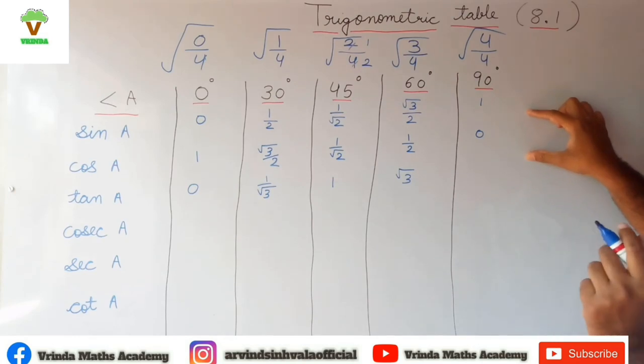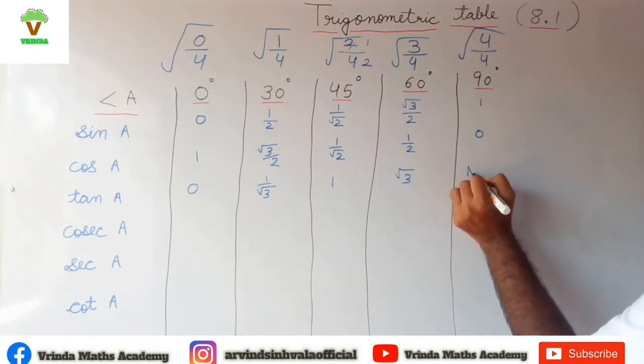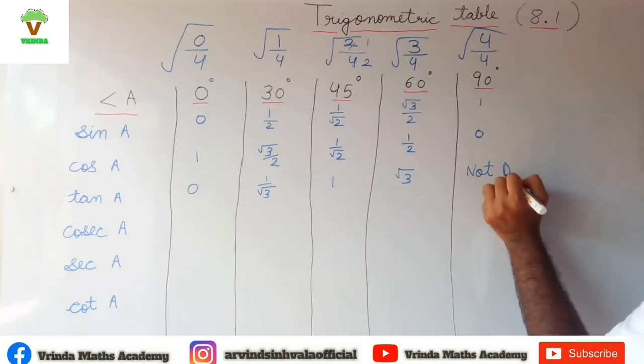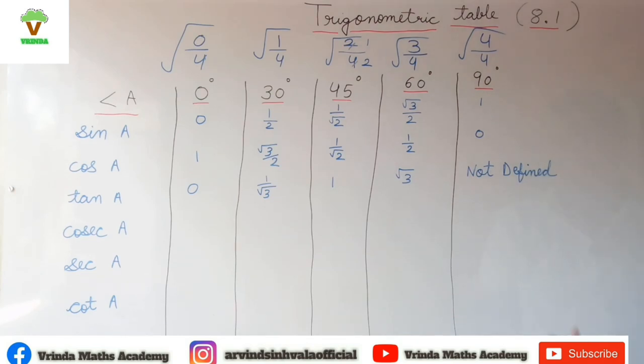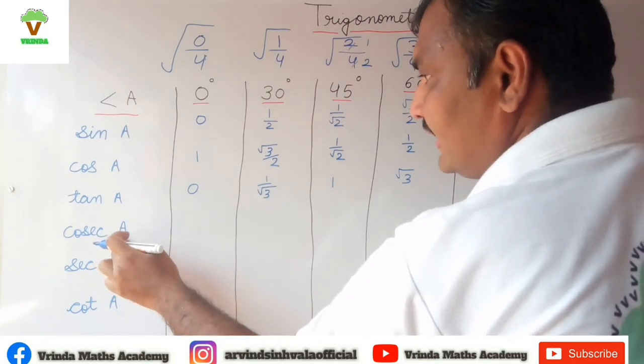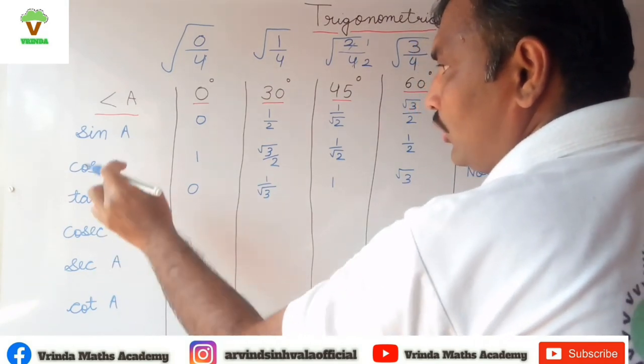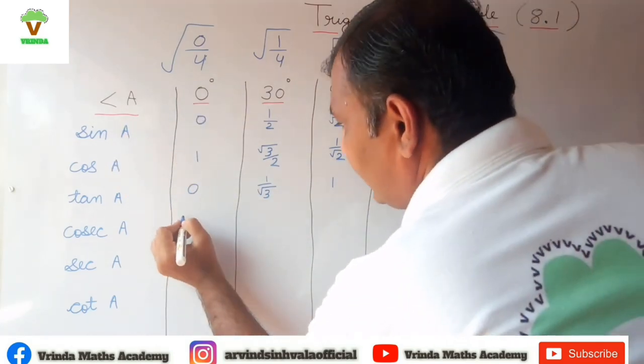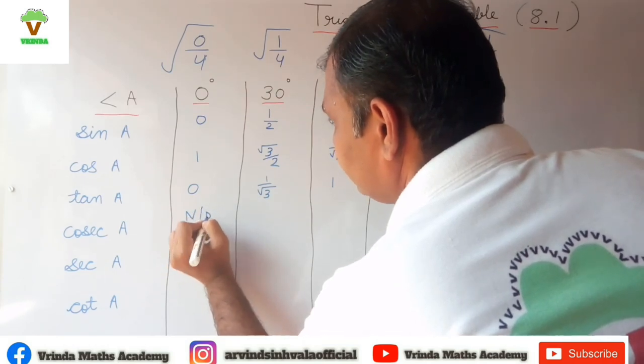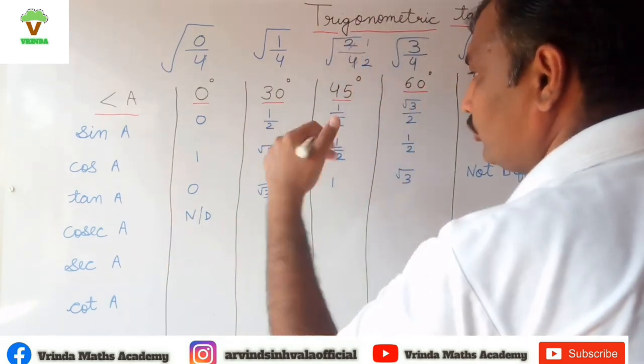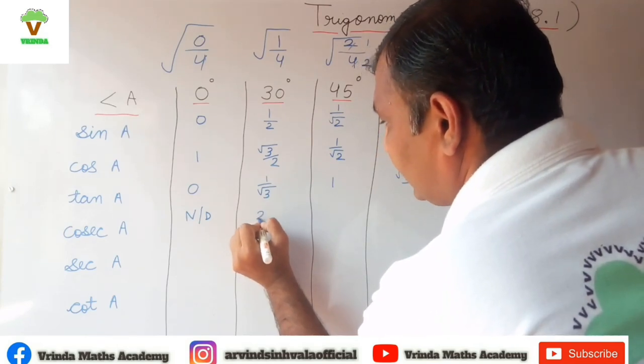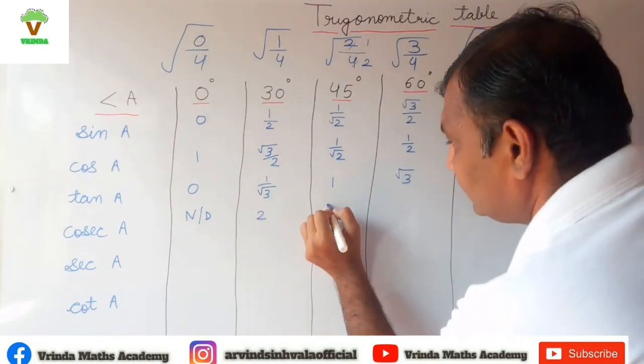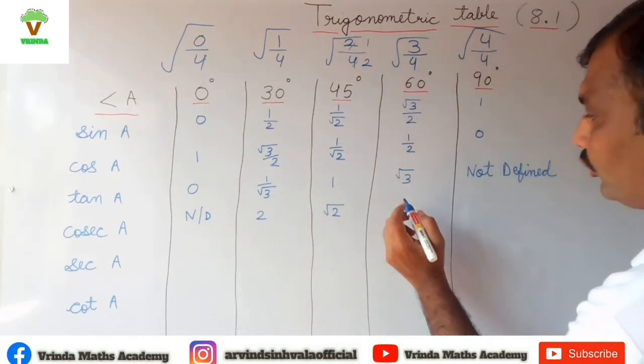Now cosec A, cosec A is opposite of sine A, 1 upon sine A. So 1 upon 0, again not defined. 1 by 2, opposite of 1 by 2 is 2 by 1, that is 2. Root 2 by 1 is root 2, 2 upon root 3, and opposite of 1 is 1.